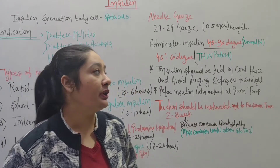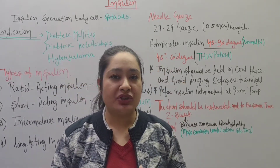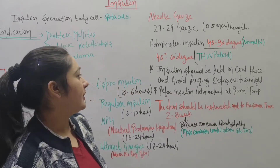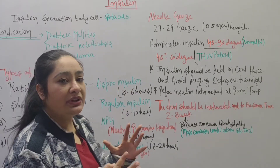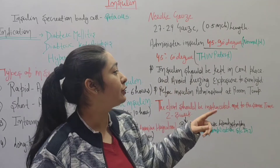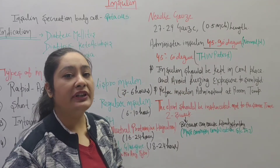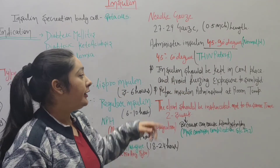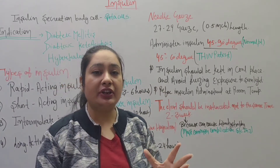When injecting insulin, the angle used is 45 to 60 degrees. Regarding storage, insulin should be kept in a cool place. Avoid freezing and avoid exposure to sunlight.